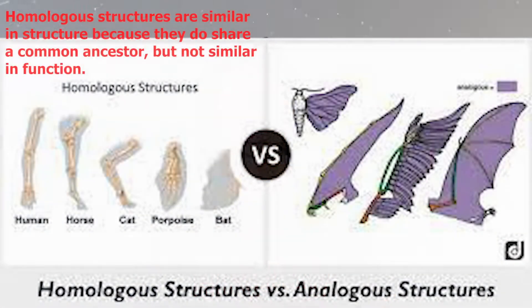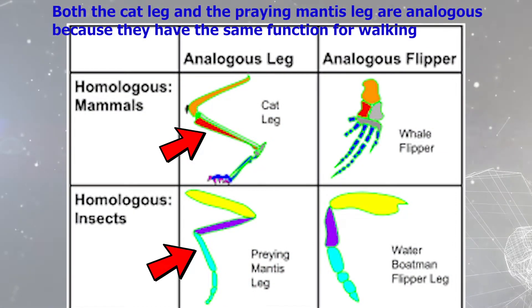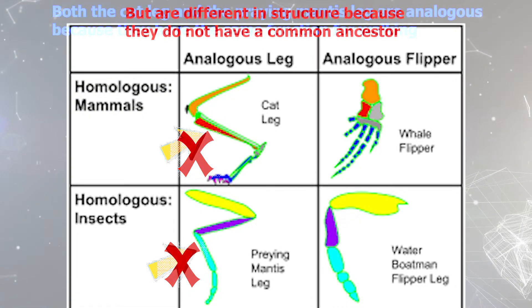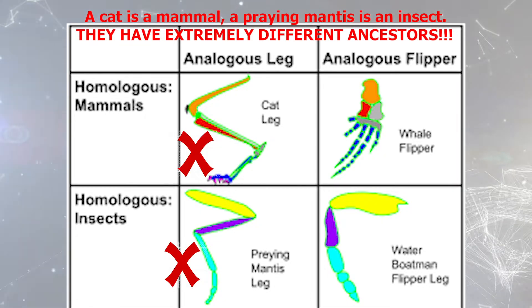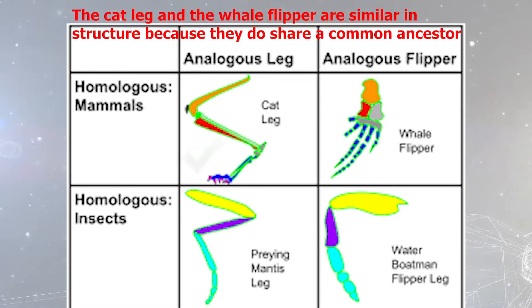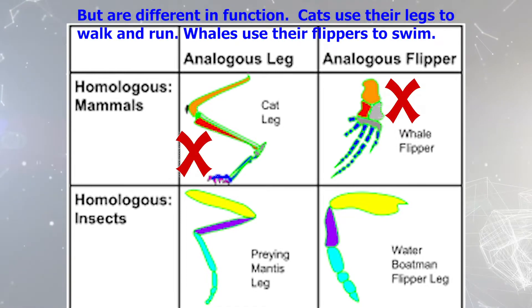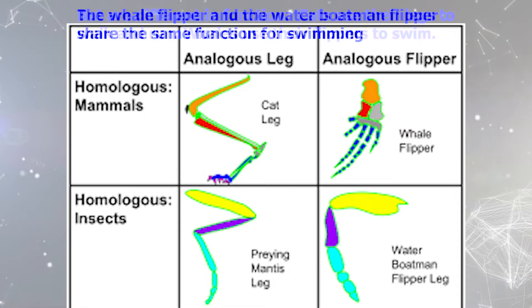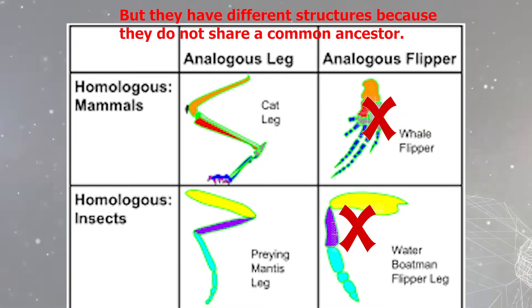To sum it up: homologous structures are similar in structure because they do share a common ancestor but not similar in function. Analogous structures are similar in function but not similar in structure because they do not share a common ancestor. For example, the cat leg and the praying mantis leg are analogous because they have the same function for walking but are different in structure because they do not have a common ancestor — a cat is an animal, a praying mantis is an insect, and they have extremely different ancestors. The cat leg and the whale flipper are similar in structure because they share a common ancestor but are different in function: cats use their legs to walk and run, whales use their flippers to swim. The whale flipper and the water boatman flipper legs share the same function for swimming but have different structures because they do not share a common ancestor.